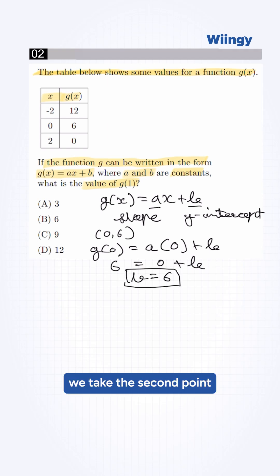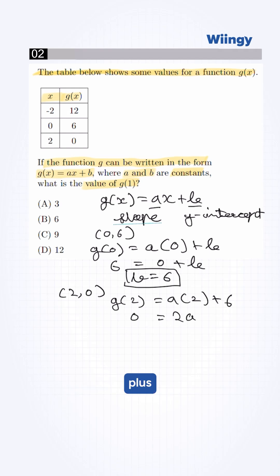Now we take the second point which is 2 comma 0. Putting the values, it will be g of 2 is equal to a into 2 plus 6. g of 2 is 0. This will be 2a plus 6. Minus 6 is equal to 2a. So a value is minus 3.